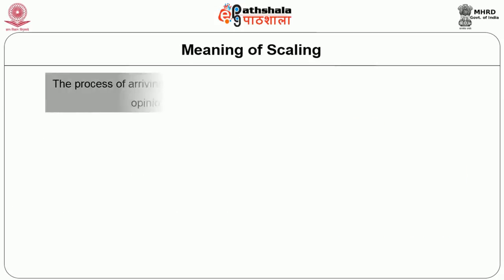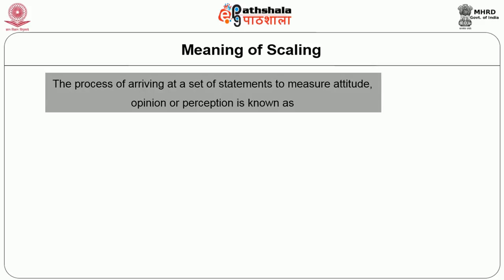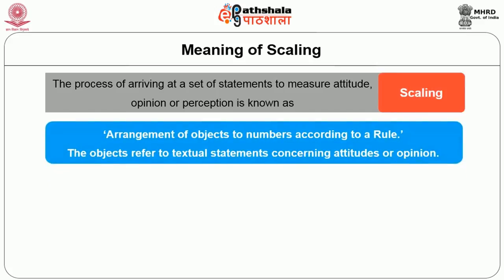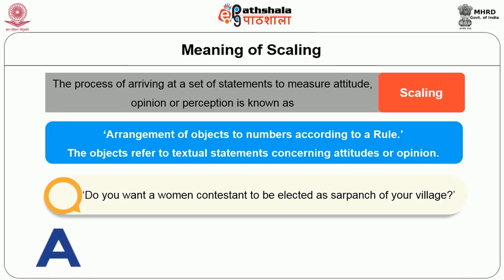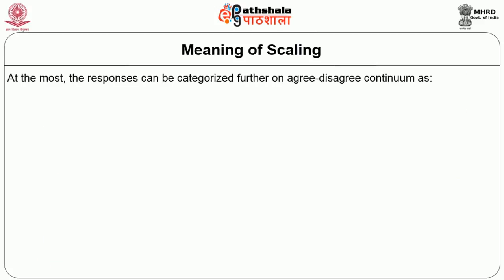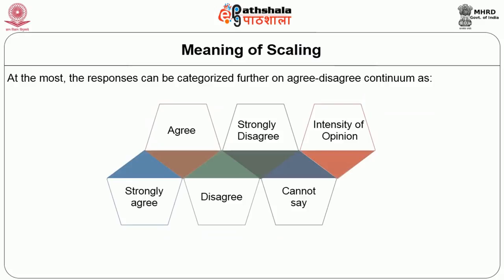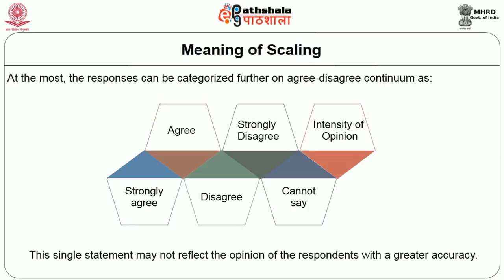Let us look at the meaning of scaling. The process of arriving at a set of statements to measure attitude, opinion, or perception is known as scaling. Scaling may be defined as the arrangement of objects to numbers according to a rule. Here, the objects refer to textual statements concerning attitudes or opinions. The reason for the use of a set of statements is simple. For example, a single statement like 'Do you want a woman contestant to be elected as sarpanch of your village?' — the respondent may say yes or no, or prefer not to respond. At the most, the responses can be categorized further on an agree-disagree continuum as strongly agree, agree, disagree, strongly disagree, or cannot say, to assess the intensity of opinion. However, this single statement may not reflect the opinion of the respondents with greater accuracy.